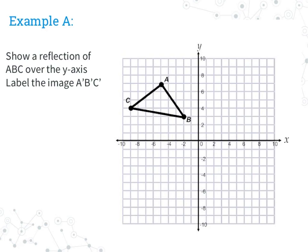Here in example A, it says show a reflection of triangle ABC over the Y-axis and label the image A prime, B prime, C prime. The first most important thing is to figure out which axis you're going to be crossing over when you do your reflection. Since we're talking about the Y-axis in this case, I'm going to draw a line down from my Y-axis because that's the one I know I'm going to be going over.